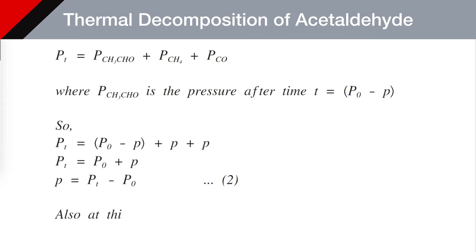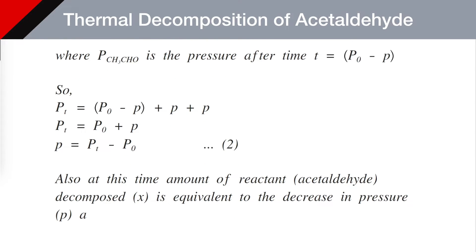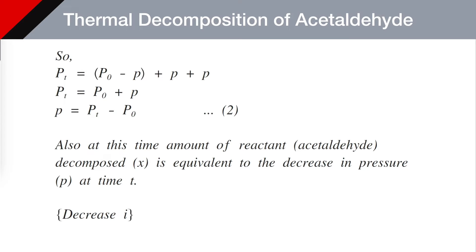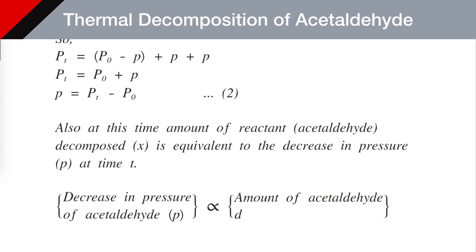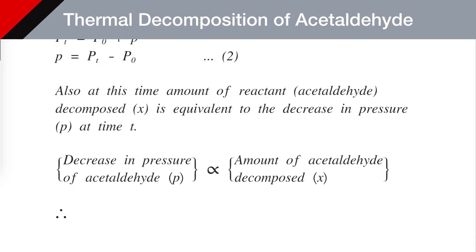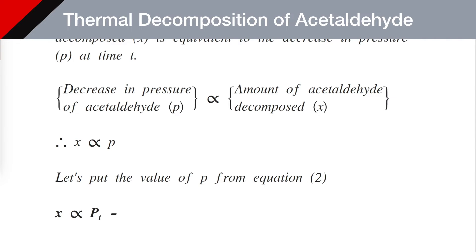Also at this time, the amount of reactant (acetaldehyde) decomposed, X, is equivalent to the decrease in pressure p at time T. So the decrease in pressure of acetaldehyde, p, is proportional to the amount of acetaldehyde decomposed, X. Taking the value of p from equation 2, we get X is proportional to Pt − P₀. This is equation number 3.